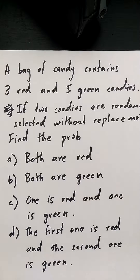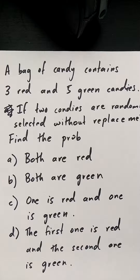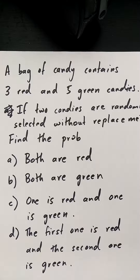In this problem, a bag of candy contains three red and five green candies. If two are selected at random without replacement, find the probability that: both are red, both are green, one is red and one is green, and the first one is red and the second one is green.